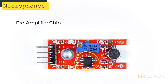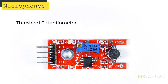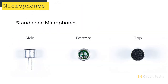Breakout boards usually come with a pre-amplifier built in. The pre-amplifier amplifies the microphone's audio signal to a level that the Arduino can work with. This board has an analog output and a digital output. This is the threshold potentiometer - it sets the sensitivity of the microphone. This is a standalone microphone. These are a little harder to set up since they don't have a pre-amplifier, so you have to connect one yourself.